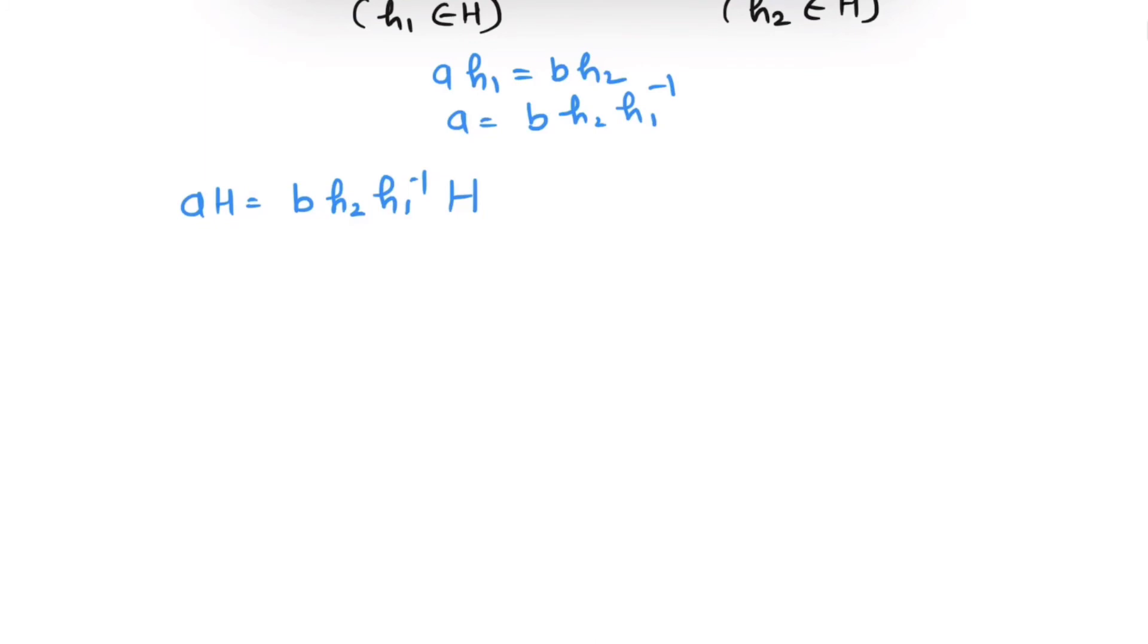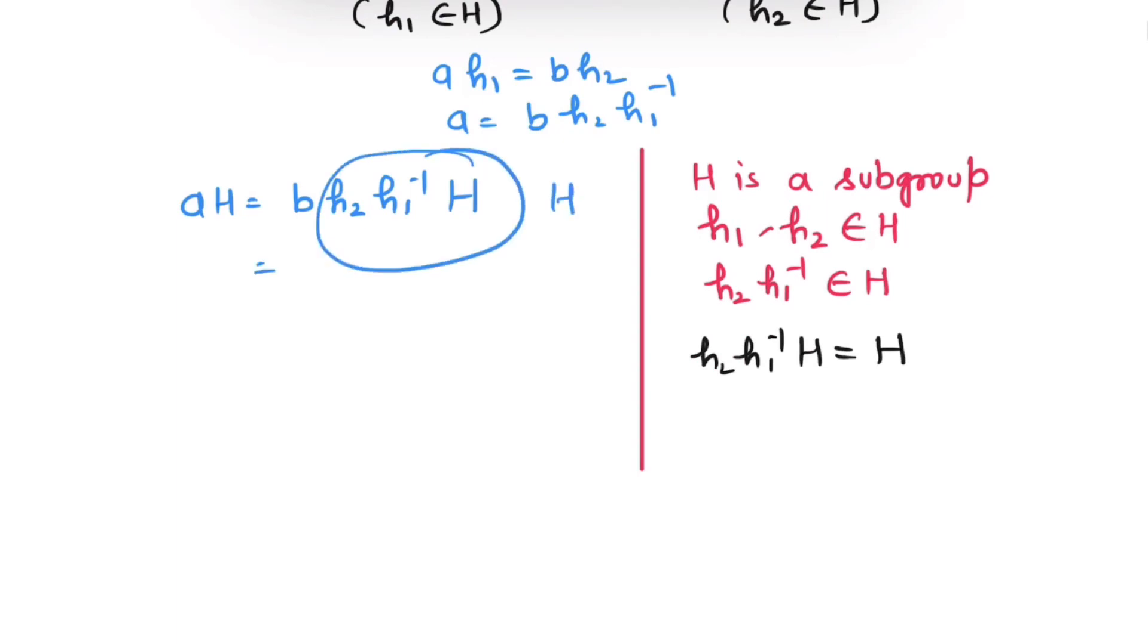Now, pay a little attention. We have H is a subgroup. H₁ and H₂ are members of H. Hence, H₂H₁ inverse will also be a member of H, because H is a subgroup. And from the previous property, we can say H₂H₁ inverse H equals to H. Hence, this is nothing but H. So we have AH equals to BH. Hence, we can conclude, if two cosets are not disjoint, then they are identical. Thus, AH intersection BH equals to Phi or AH equals to BH. This completes the proof.